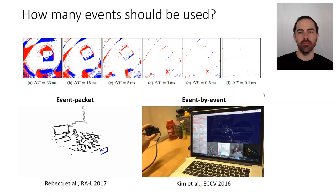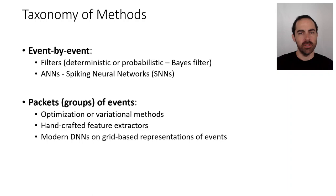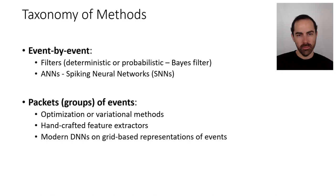Let's give a short overview of methods of event processing. This may look generic at this point since we haven't looked at the detailed methods yet. At a high level: for event-by-event methods we may consider filters — either deterministic or probabilistic such as Bayes filters — and artificial neural networks such as spiking neural networks. For processing events by groups or packets, we have optimization and variational methods, handcrafted feature extractors plus shallow networks, and modern deep neural networks on grid-based representations of events.